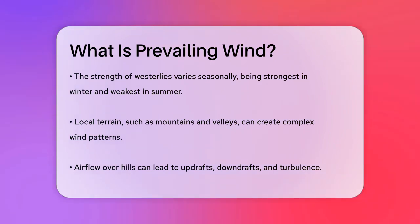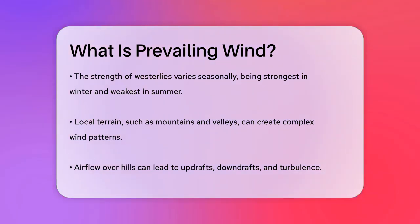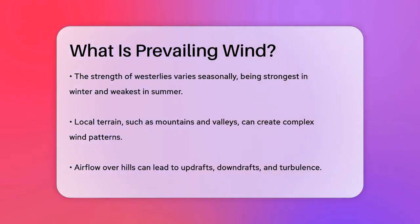Local terrain also plays a significant role in shaping prevailing winds. In areas with mountains and valleys, the wind patterns can be quite complex. As air flows over hills and down into valleys, it can create strong updrafts, downdrafts, and eddies. This can lead to unpredictable flow patterns and turbulence.